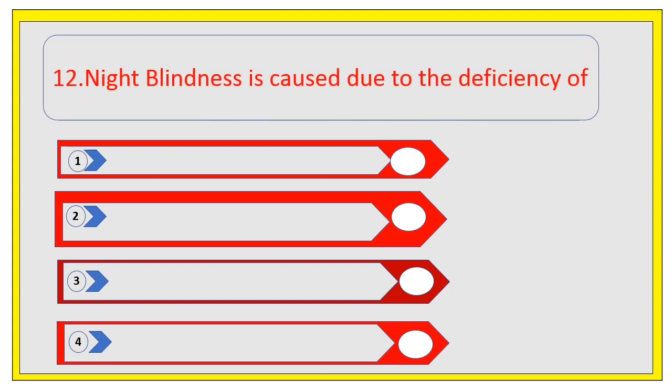Night blindness is caused due to deficiency of. Options are vitamin A, vitamin B, vitamin C, and vitamin E. The right answer is vitamin A.